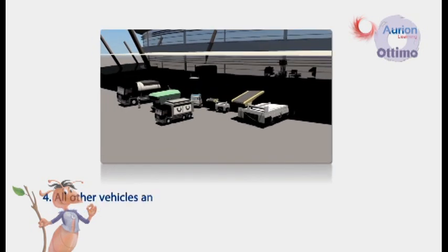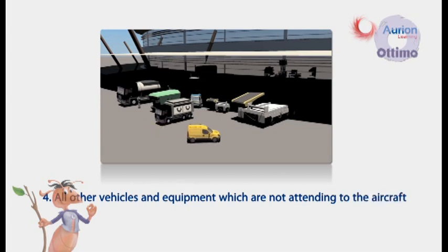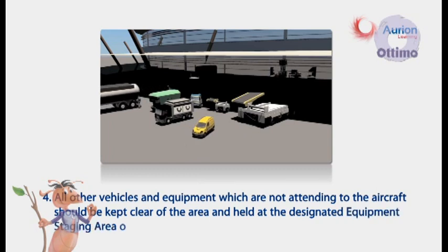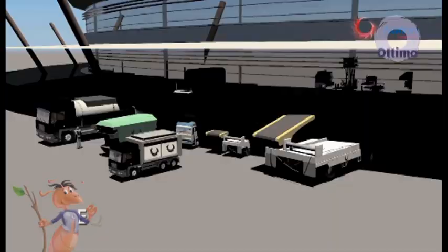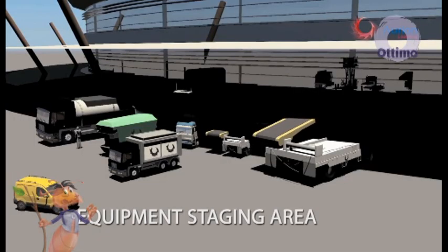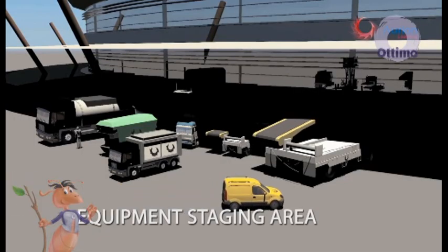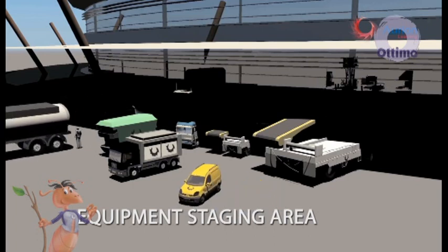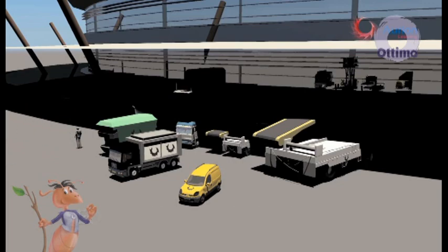All other vehicles and equipment which are not attending to the aircraft should be kept clear of the area and held at the designated Equipment Staging Area or ESA. The equipment staging area is an area where airlines and ground handling agents can park their equipments and vehicles before arrival of aircraft.